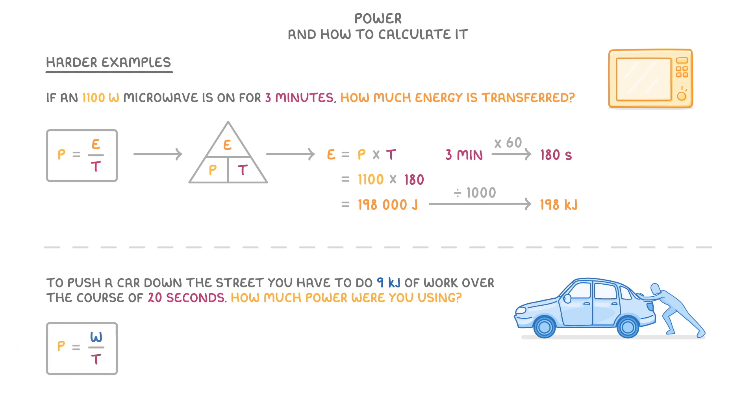Once we have the equation, we can see that all we have to do is divide the work done, which is 9 kilojoules or 9000 joules, by the time taken of 20 seconds. So the power would be 450 watts.